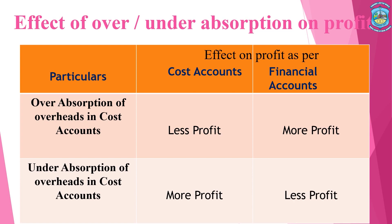Now we see the effect of over and under absorption of overheads on profit. Over absorption of overheads in the cost account means we are charging over expenditures, so the profit of the cost book will be less. Due to under absorption of overheads in the cost book, profit will be more.